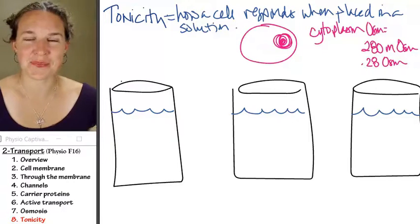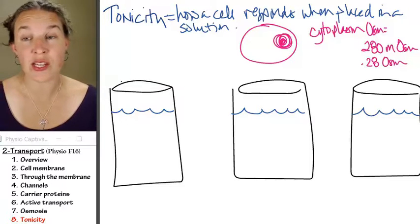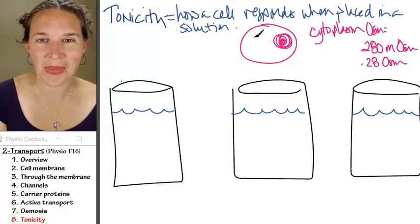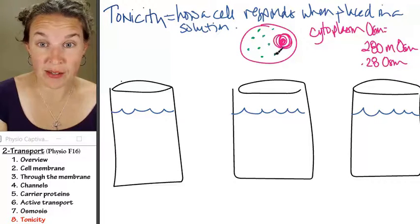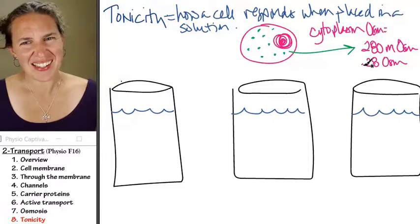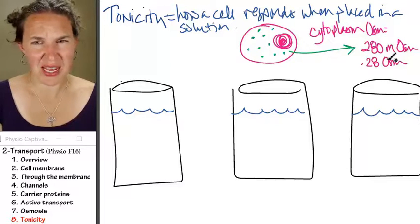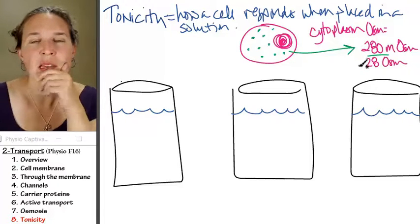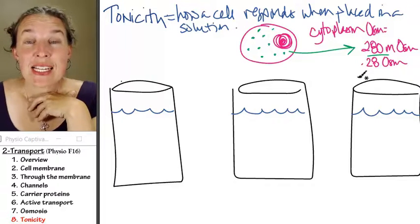Next question. The 280 milliosmoles indicates there are particles in your cytoplasm. Are they penetrating or non-penetrating? There has to be particles because particles are the only way that we can have concentration. So there got to be 280 milliosmoles of particles inside there. Yes, there are. Are they penetrating?